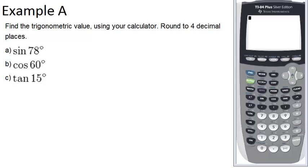In example A, it says find the trigonometric value using your calculator, round to four decimal places. So all we're doing is just figuring out what these ratios are, and it's really just plugging it into the calculator. The only thing you have to be careful about is that your mode is degrees.